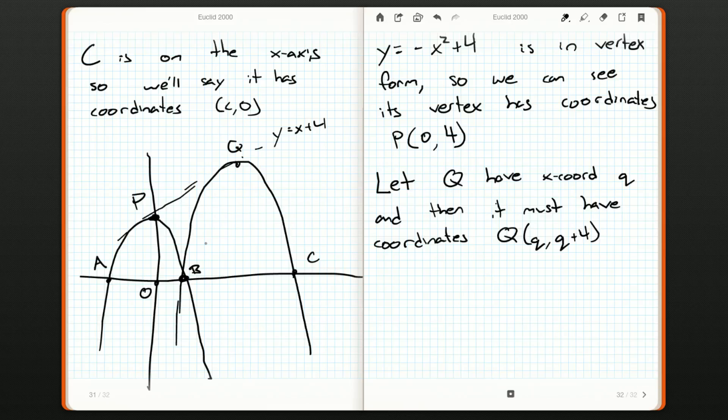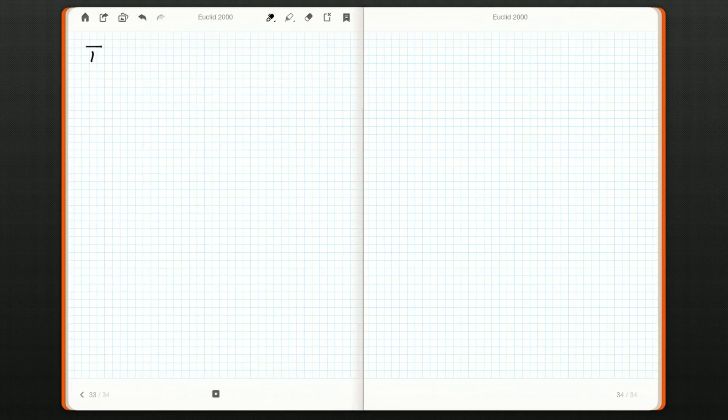So, A and B both have, since they intersect the X-axis, they both have Y coordinate 0. Now, since they're on the parabola, they must satisfy 0 = -x² + 4. So, x² = 4. So, x = 2 or -2. And then we can easily tell what the coordinates of A and B are. A will be at (-2, 0). B will be at (2, 0). Because in our picture, B is on the right-hand side. So, it's going to have the positive value of x, which is 2.